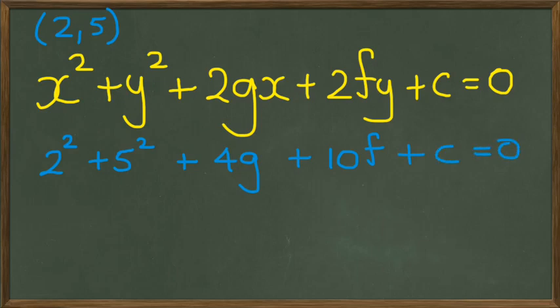And I will end up with 4g plus 10f plus c equals negative 29. So this is going to be my first equation.